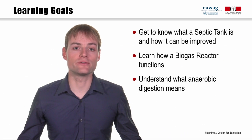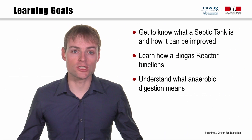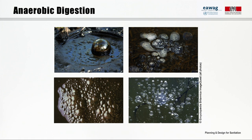These technologies are based on anaerobic processes. The word anaerobic describes biological processes that occur in the absence of oxygen. These processes naturally take place in swamps, marshes, ponds and other standing waterbodies. They can easily be recognized by the formation of gas bubbles, as shown in these photographs. The gas is formed at the bottom of a pond, where anaerobic bacteria decompose carbon-rich organic substances into methane and carbon dioxide, also called biogas.